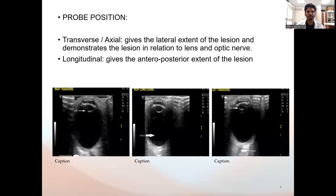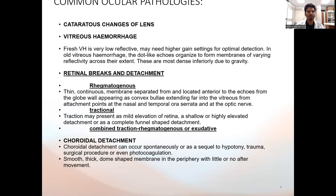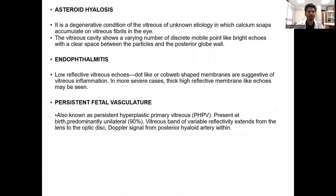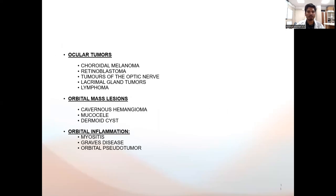Transverse and longitudinal positions were used for probe placement for better visualization of the globe. The common ocular pathologies include cataracts, lens disorders, vitreous hemorrhages, retinal breaks and detachment — including rhegmatogenous, traction and combined — and choroidal detachment. Other pathologies include asteroid hyalosis, endophthalmitis, and persistent fetal vasculature. Common ocular tumors include choroidal melanoma, retinoblastoma, tumors of the optic nerve, lacrimal gland tumors and lymphoma. Orbital mass lesions include cavernous hemangioma, mucocele and dermoid cysts. Orbital inflammations include myositis, Graves' disease and orbital pseudotumors.